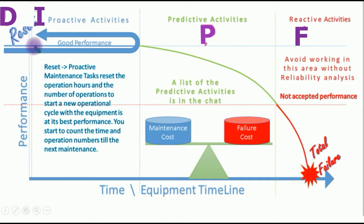After that, during the proactive activities time, where the equipment is performing at 100% performance, 100% efficiency and productivity — it's stable, nothing happens to the machine, the machine is perfect. During this time, you are preparing the maintenance activities: preparing the lubricants, preparing the spares, preparing the KPIs that you are working on, preparing the timing, preparing your tools, preparing whatever is needed to do your maintenance activities.